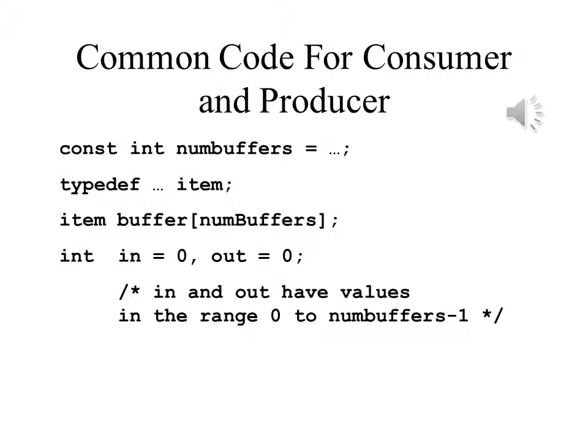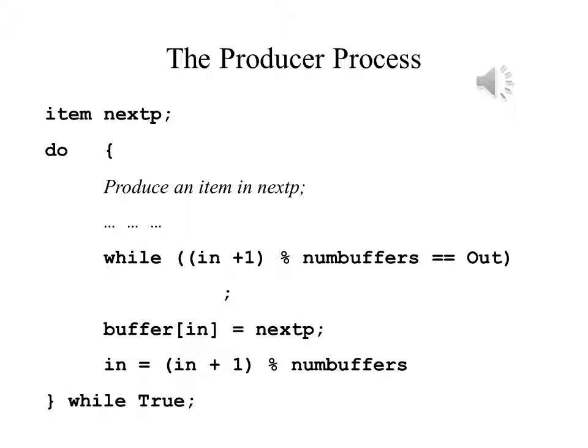The consumer and producer processes will share the buffers as well as the variables in and out, which point to the next free position in the buffer and the first full position in the buffer. If in is equal to out, then the buffer is empty. If the remainder of in plus one divided by n equals out, then the buffer is full. Next p is the next item to be produced. After the producer produces an item, it has to determine if there is an available space in the buffer for it. If not, it has to wait until there is an available space. That's the reason for the while loop.